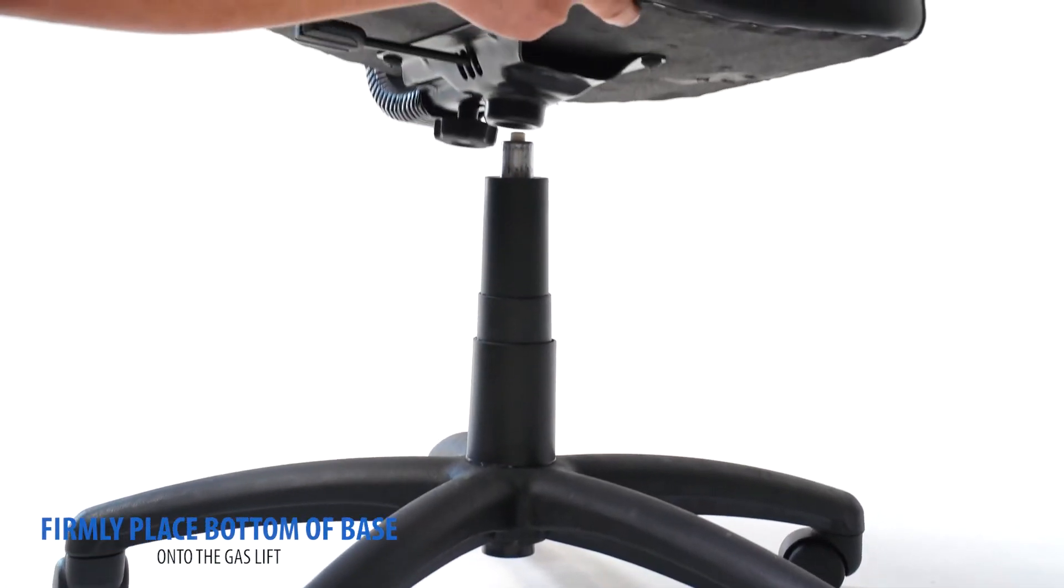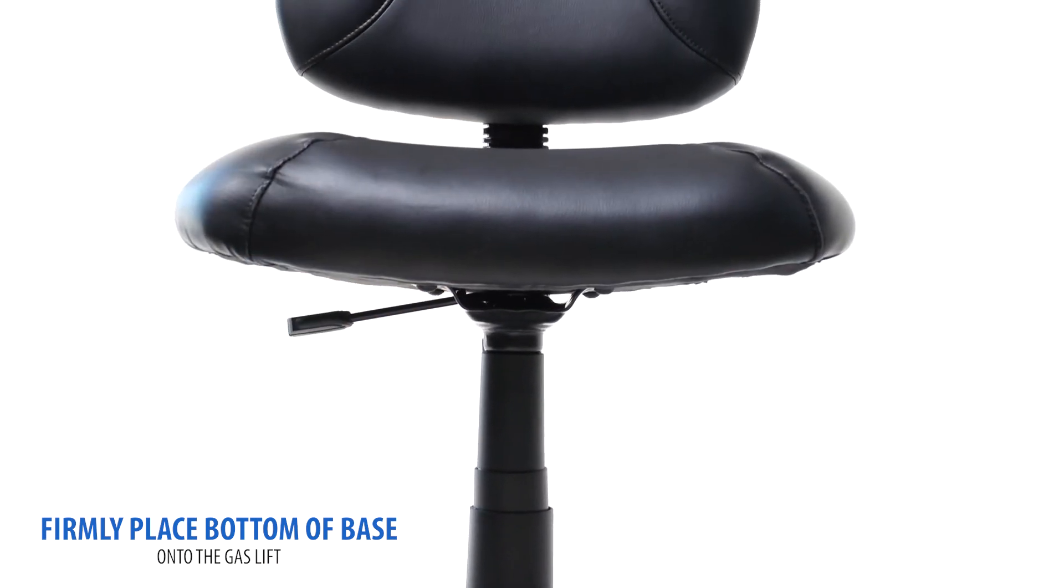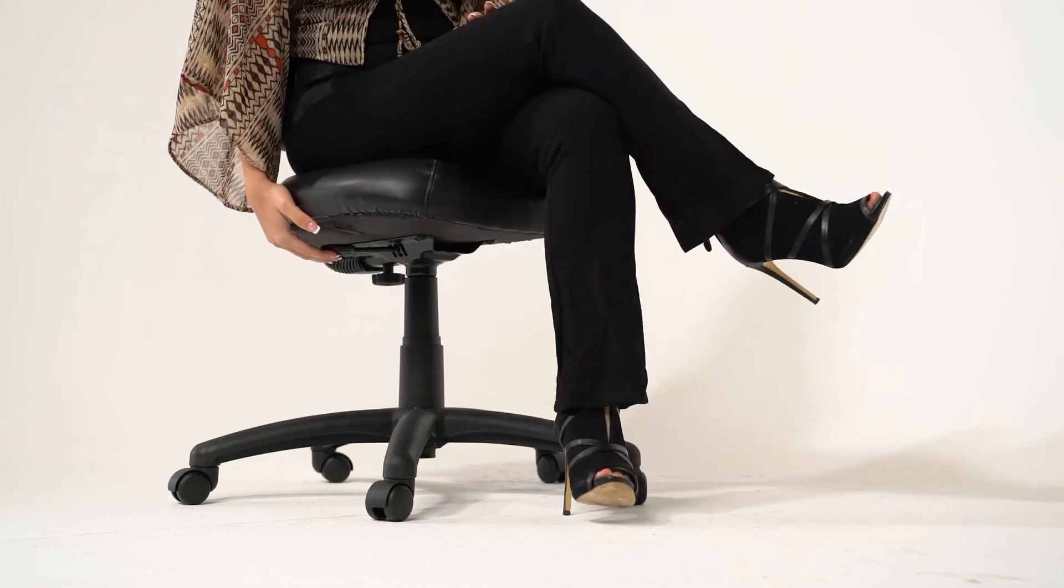Firmly place the bottom of the base onto the gas lift. Your final step of assembly is to sit on your new chair to firmly engage the mechanism onto the gas lift.